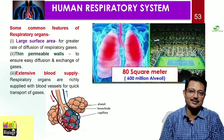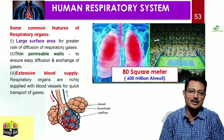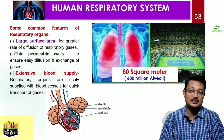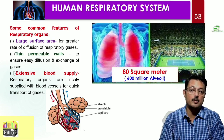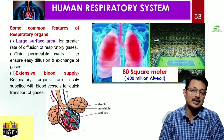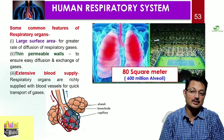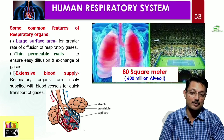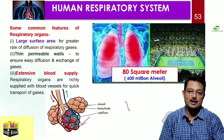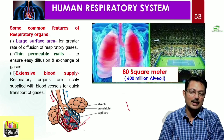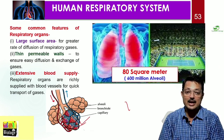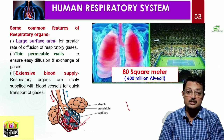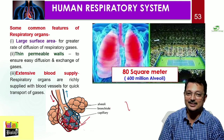For any organ to be a respiratory organ, it must fulfill certain important features: large surface area, thin and permeable walls so gases can exchange easily, and an extensive blood supply with surrounding capillaries. Here is a fascinating statistic: our two lungs contain approximately 600 million alveoli, and if unfolded, their area would be about 80 square meters — which is equal to a tennis court. Isn't that fascinating?